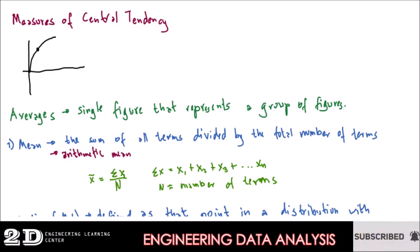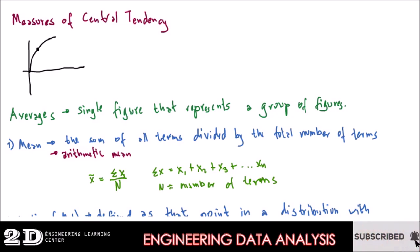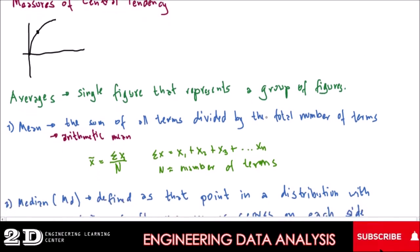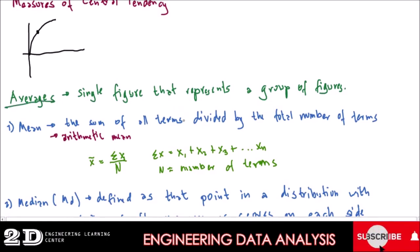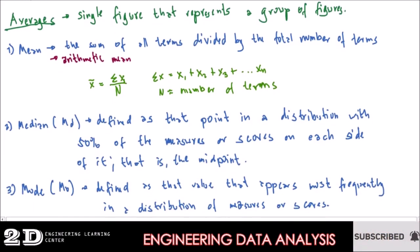We will go to the introduction to the measures of central tendency. Basically, measures of central tendency is derived or summarized by the term averages — it is a single figure that represents a group of figures. Those averages are divided into three classifications.